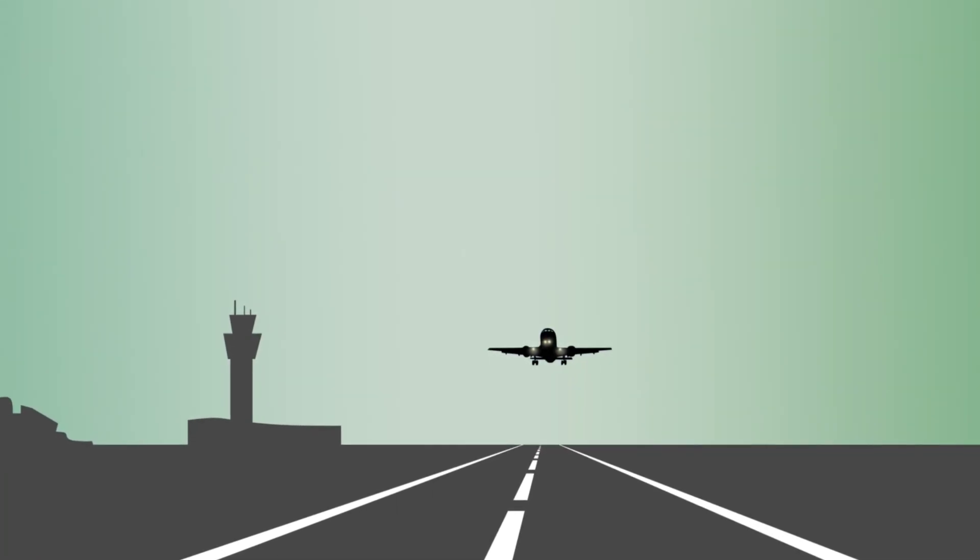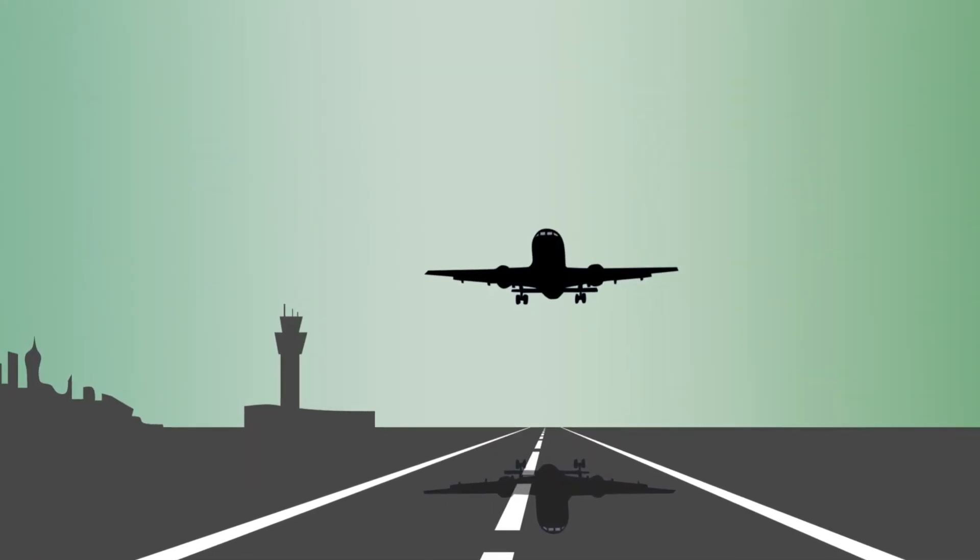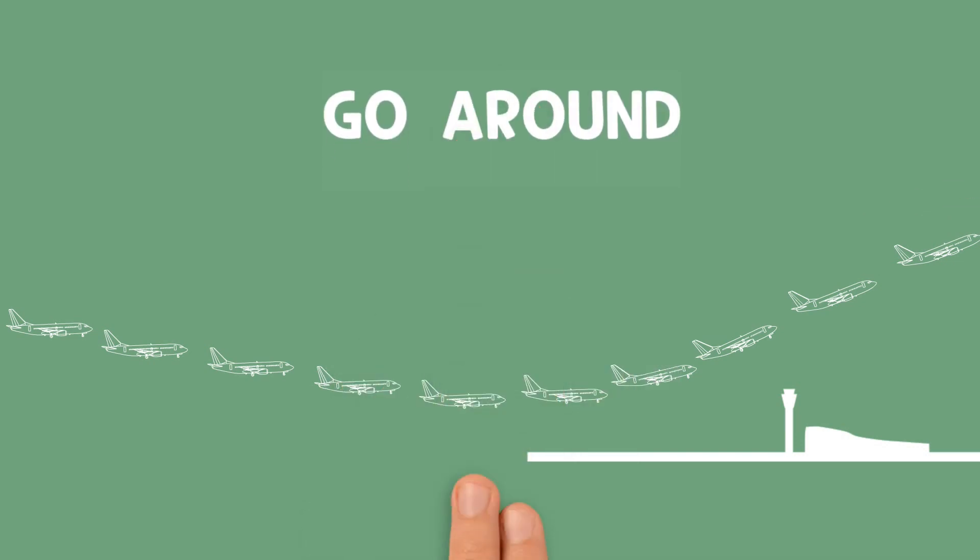Have you ever seen an aircraft trying to climb again when it seemed like it was about to land? An aircraft that has reached the landing phase in this way gives up landing and reclimbs. We call this go-around.